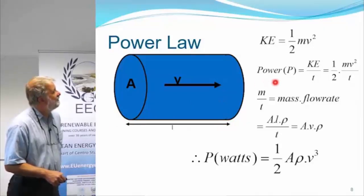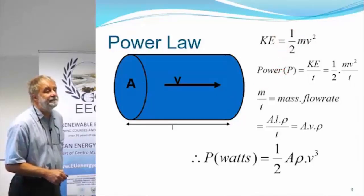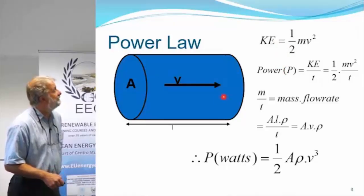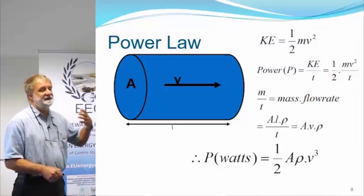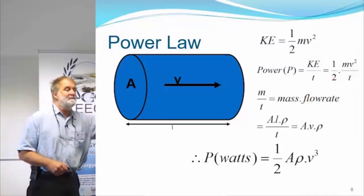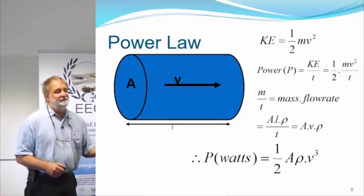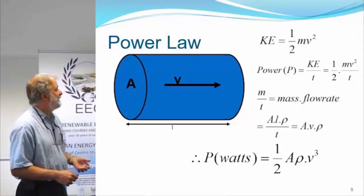So here is our kinetic energy and power is energy divided by time. So kinetic energy divided by time means that we've now got half mv squared over t. Now we've described this expression m over t as the mass flow rate. You can think of it as the kilograms per second of air moving through the swept area.